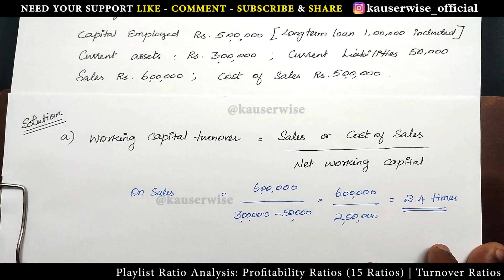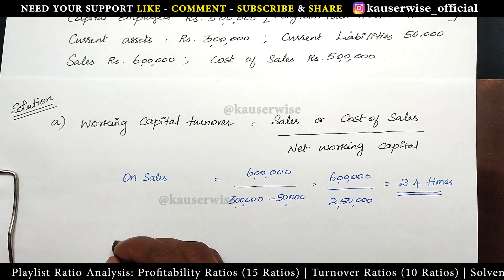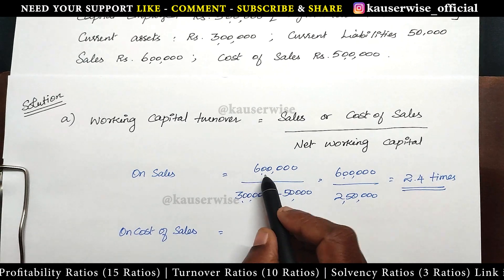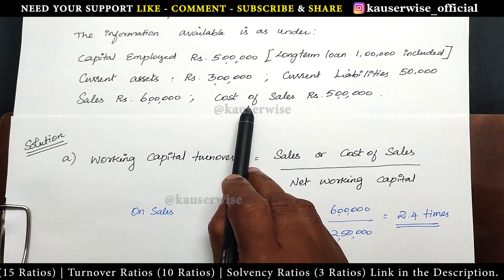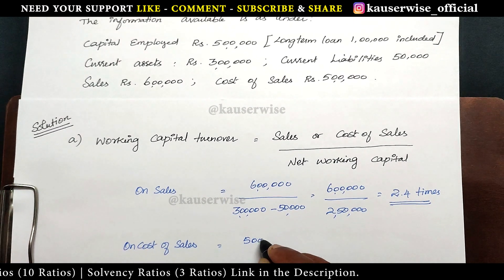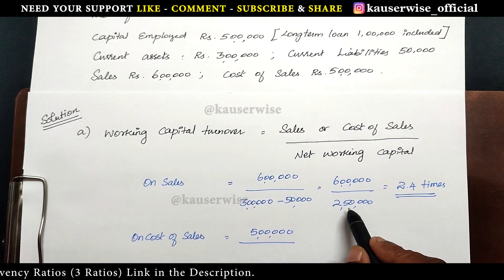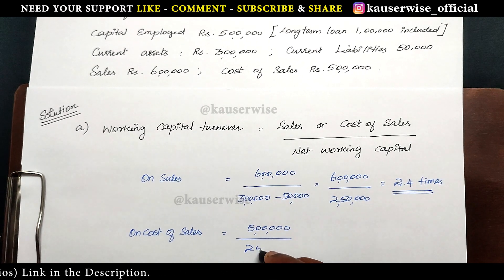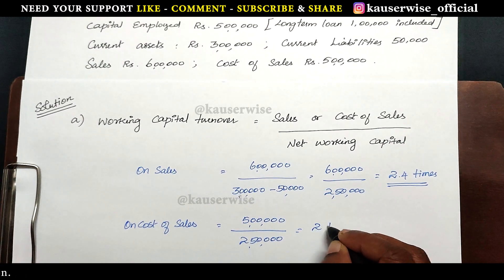In the same way we are going to find out working capital turnover on cost of sales. Instead of sales we consider cost of sales: 5 lakhs divided by working capital 2,50,000. The answer is 2 times.